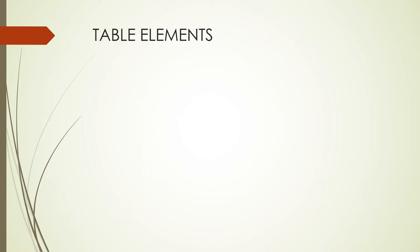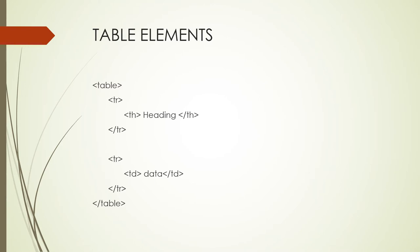This module is about creating tables in our web pages. When we want to create a table, we need to open and close the table tag. For each row of the table, you will need to open and close a table row using the TR tag. Should a row be a heading row, you would use the table heading tag. Should it be any other row, you will use the table data tag.